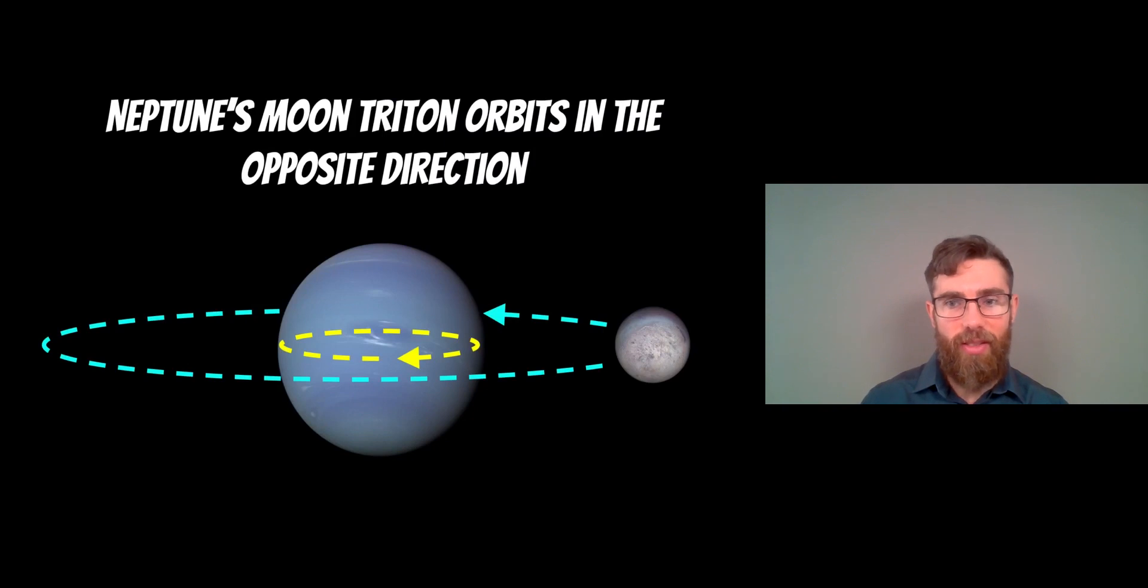Neptune's moon, Triton, is orbiting in the opposite direction, which is classified as a retrograde orbit. A prograde orbit is when it's orbiting in the same direction the planet is spinning or rotating. Retrograde is the opposite. So here you've got a moon going in the opposite direction. That automatically tells us that it didn't form in that location, that it was likely captured or it came from somewhere else.